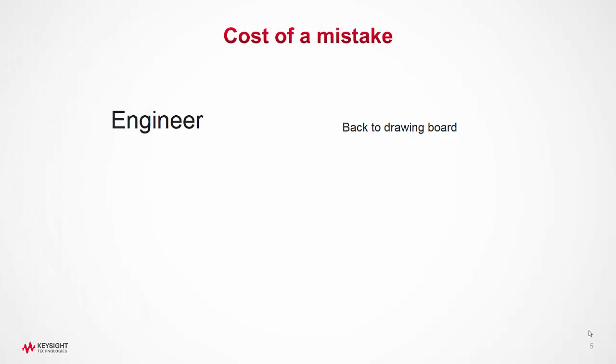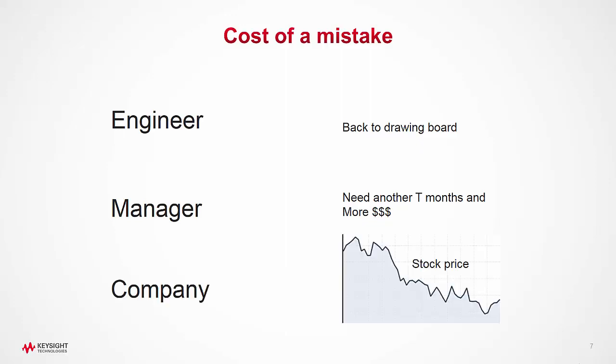The cost for an engineer is not getting it right first time and iterating the design multiple times. The cost for a project manager is not getting the phased array developed in time and within allocated budget. The cost for a company is time to market at the right price.